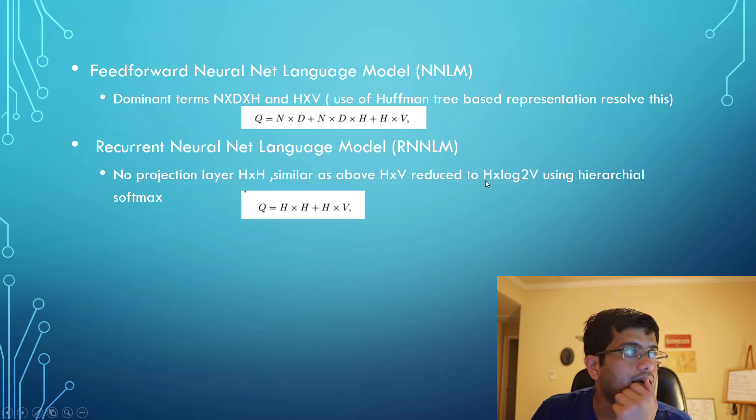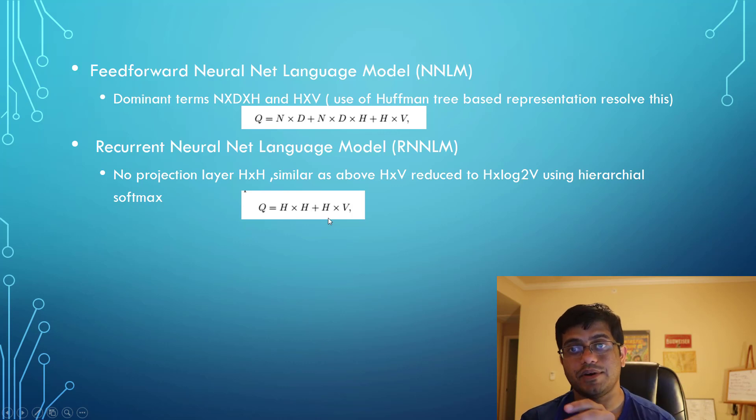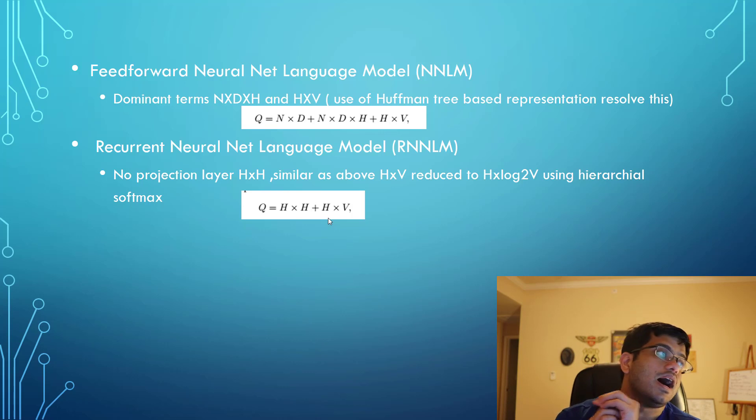The feed-forward neural net language model talks about the parameter Q in terms of number of input variables, number of hidden variables, and vocab size. The dominant factors are basically hidden layer vector times vocab size. But we could solve that using balanced binary trees to Huffman trees, which allows us to reduce this to H times log of vocab size. But still, the dominant factor would be N times D times H.